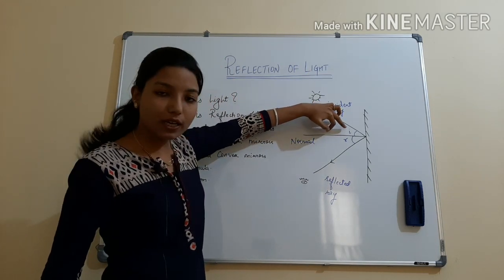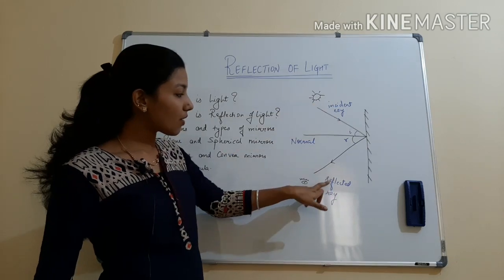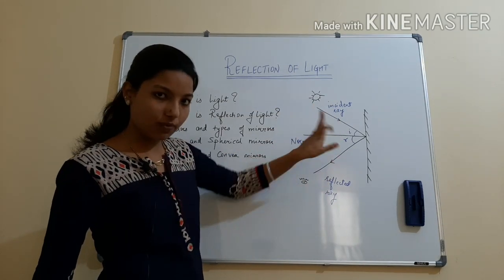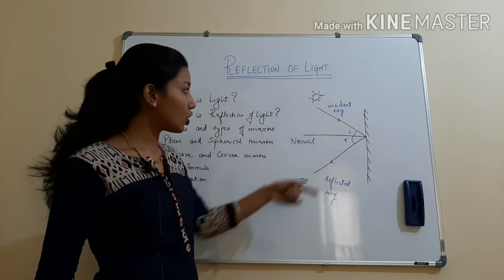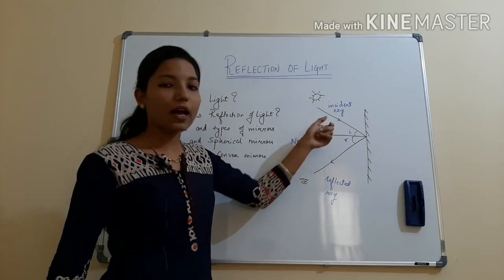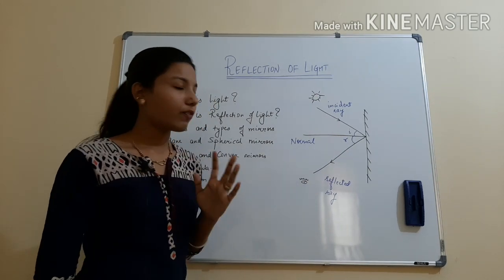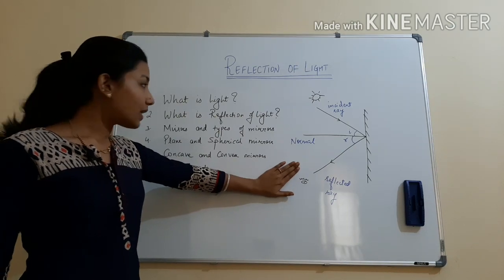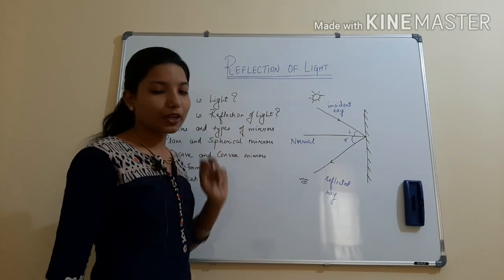And the reflected ray, the angle it makes with the normal, we'll call it angle of reflection. So there will be new things here: incident ray, reflected ray, normal, angle of incidence, and angle of reflection. Now listen, this concept is very important considering the reflection of light. Now your laws of reflection also exist. What is laws of reflection?